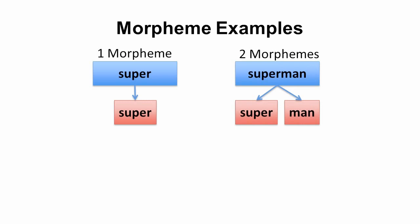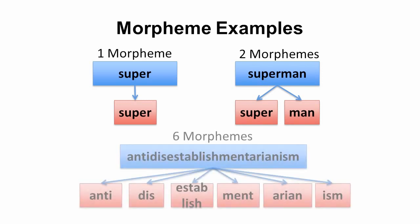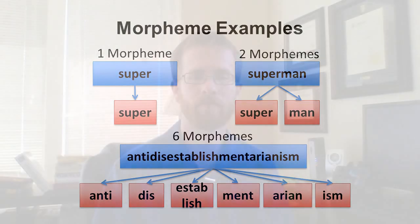And then you have one of the longest words in the English language, 'anti-disestablishmentarianism,' which is at least six morphemes: anti, dis, establish, ment, arian, ism.